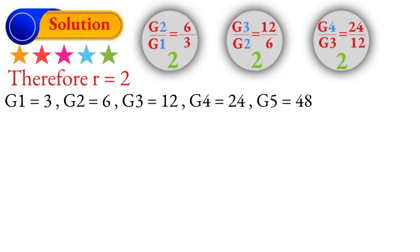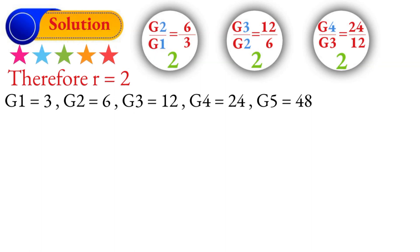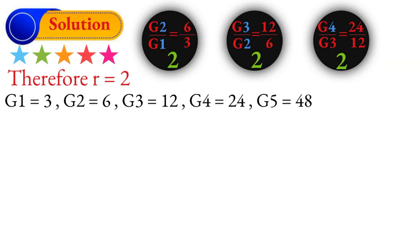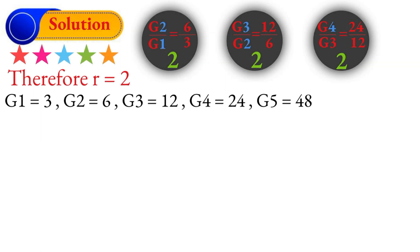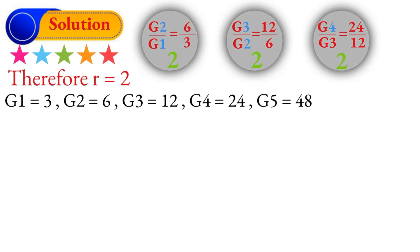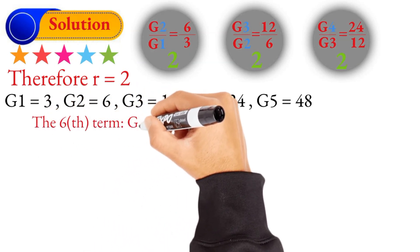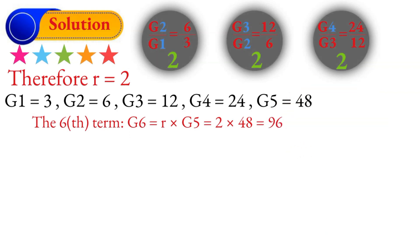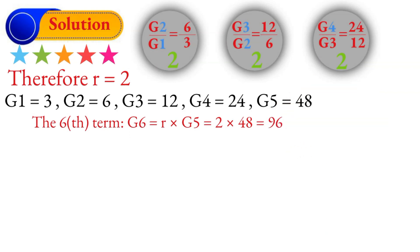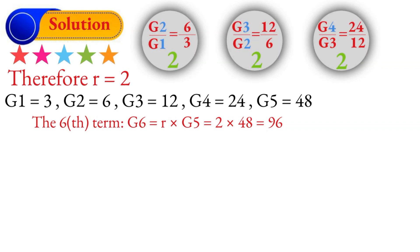G6 over G5 gives us R, which is the common ratio. So G6 equals R times G5. R is 2 and G5 is 48, so G6 equals 2 times 48, which gives us G6 equals 96.